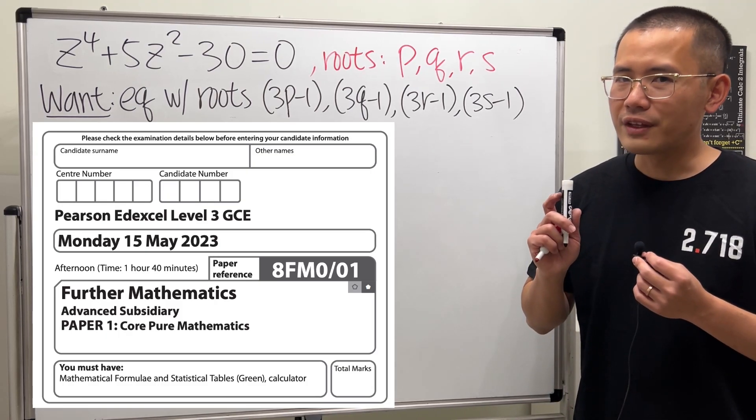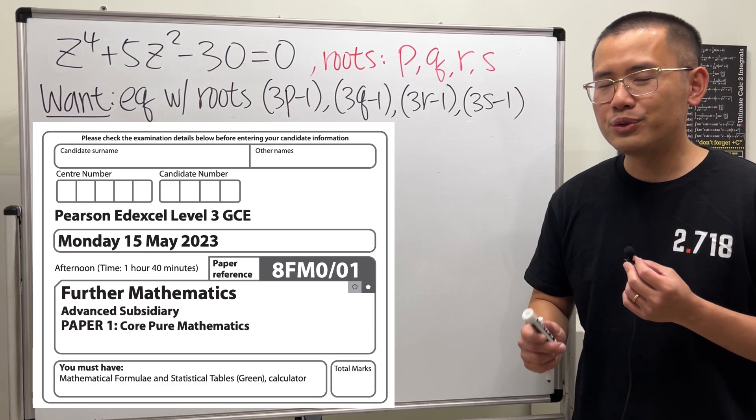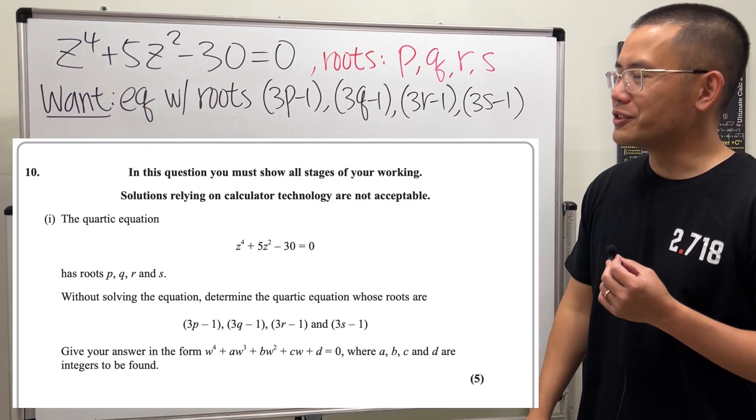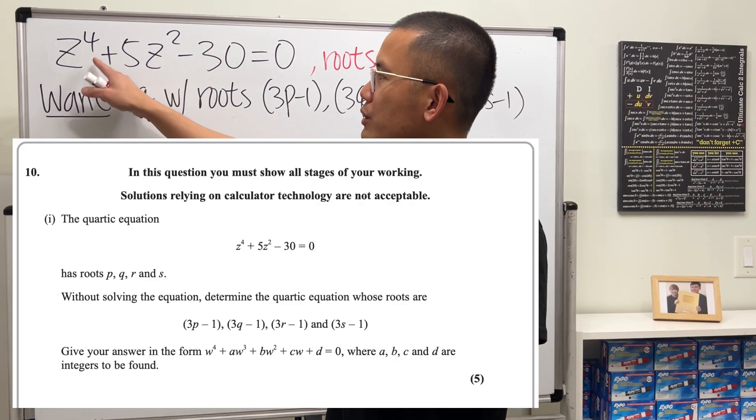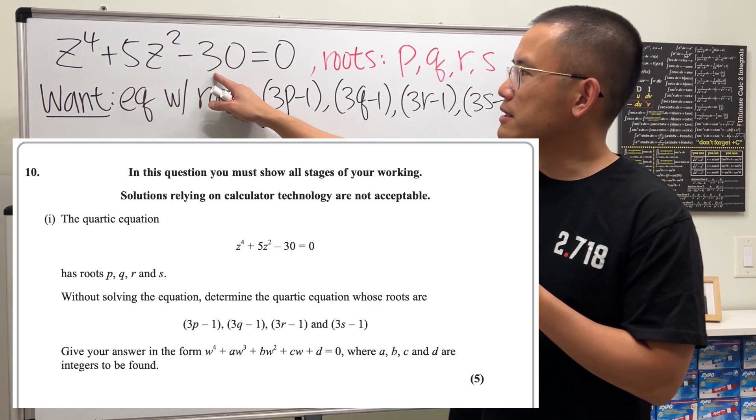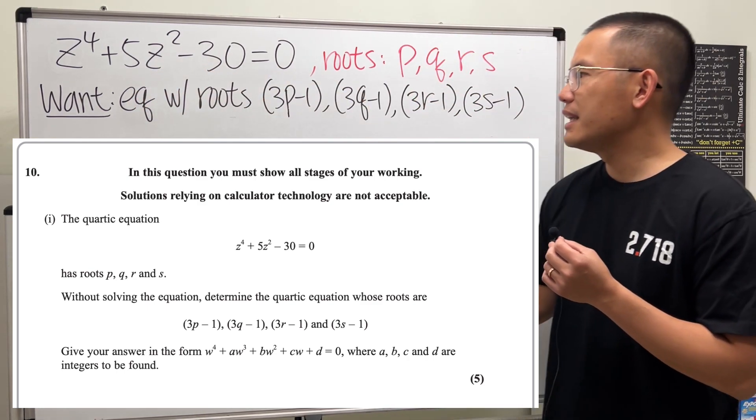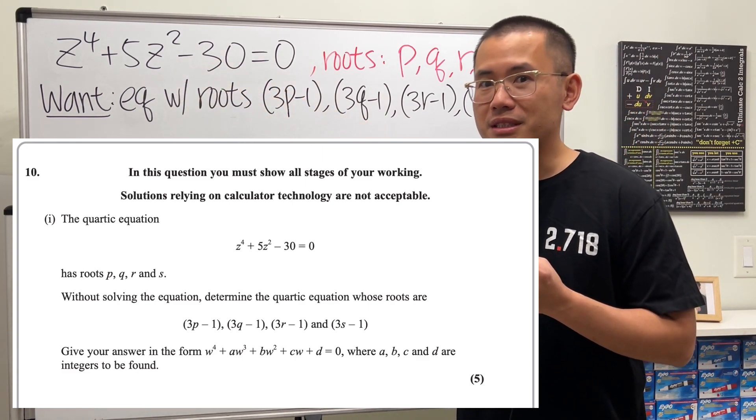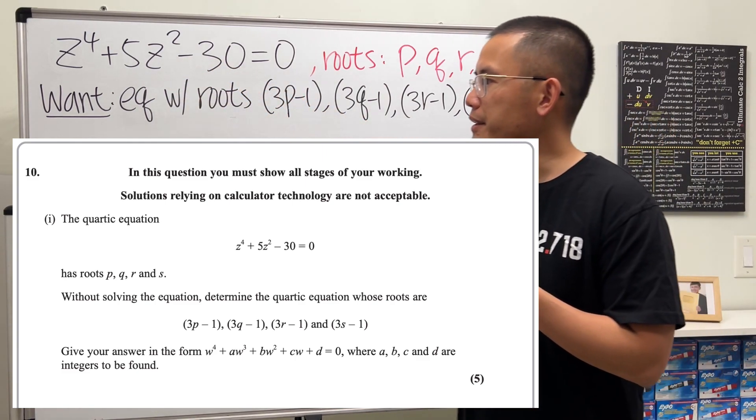Today, let's understand how to solve the last question from the 2023 AS level further math paper. Here we have a quartic equation z^4 + 5z^2 - 30 = 0, and we are given that it has roots p, q, r, s. But we don't want to solve it, because the first part wants us to just find an equation.